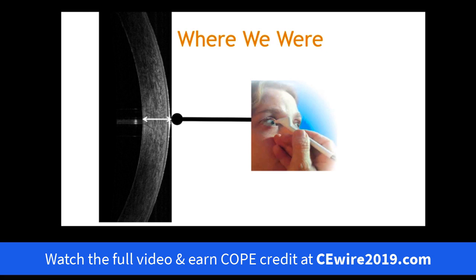Much of that came from the finding that individuals with corneal thicknesses greater than 588 micrometers were actually less likely to develop glaucoma over a five-year period. Individuals with corneal pachymetry less than 555 micrometers were at higher risk of developing glaucoma over five years if they were ocular hypertensive patients. Those between 555 and 588 micrometers fell in an in-between range.